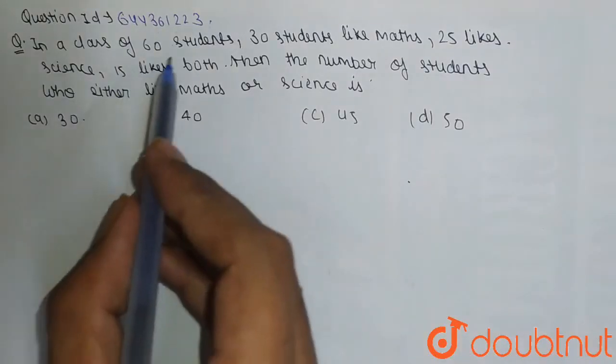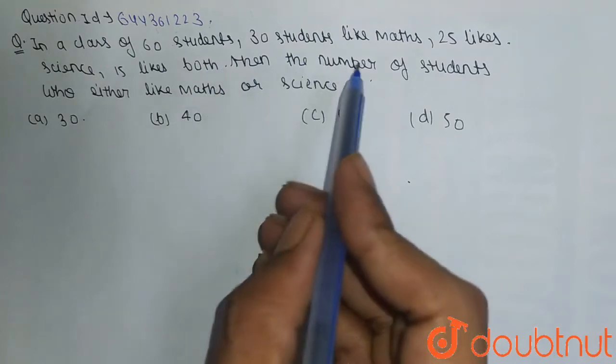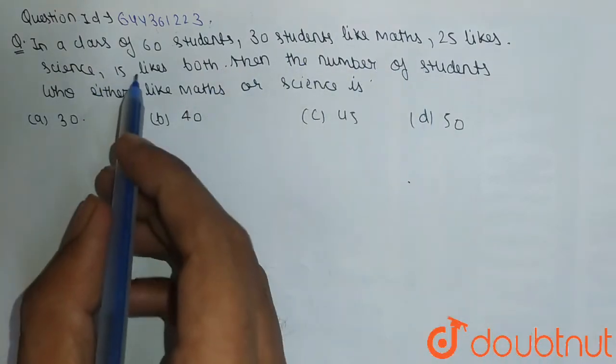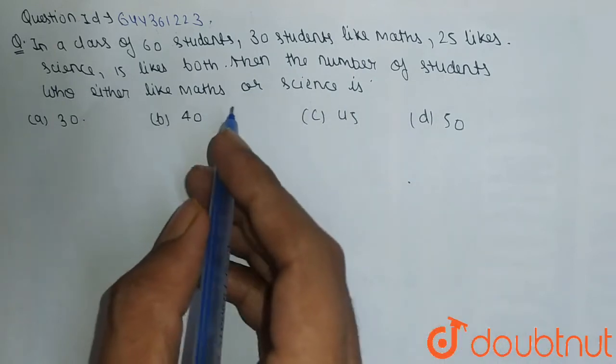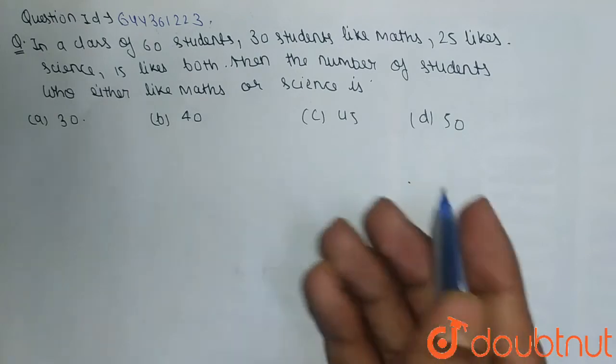The question says that in a class of 60 students, 30 students like maths, 25 like science, 15 students like both. Then we have to find the number of students which either like maths or science.